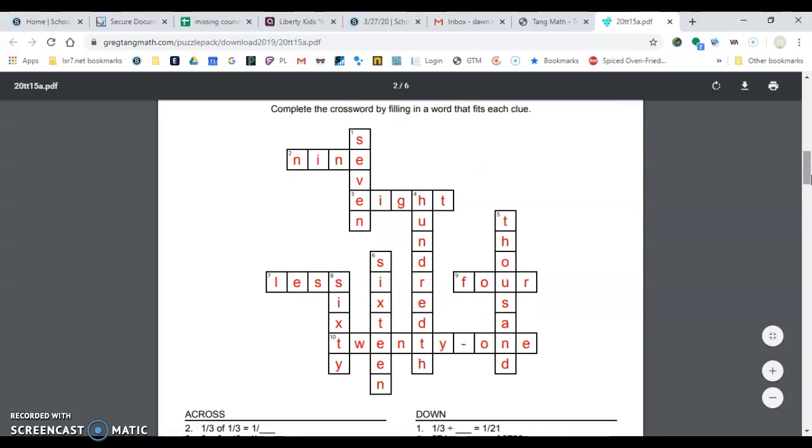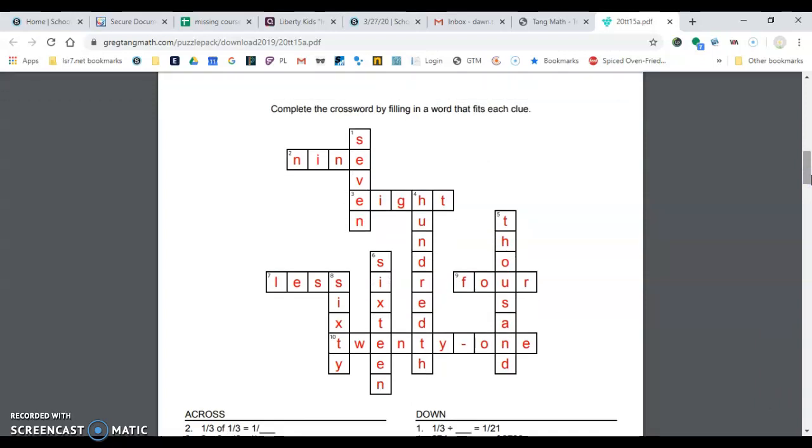One down is seven, S-E-V-E-N. Four down is hundredth, H-U-N-D-R-E-D-T-H. Five down is thousand. Six down is sixteen, S-I-X-T-E-E-N, and eight down is sixty, S-I-X-T-Y.